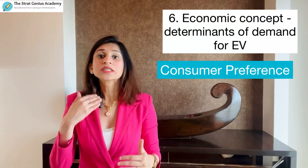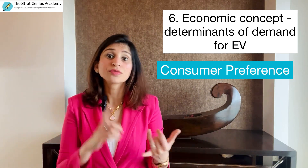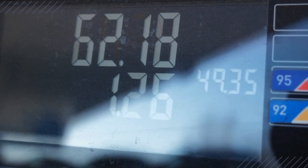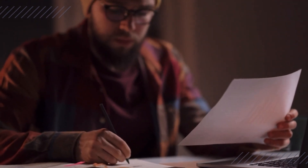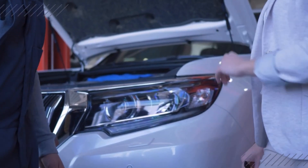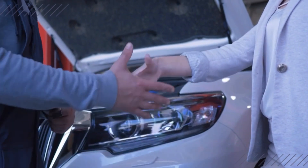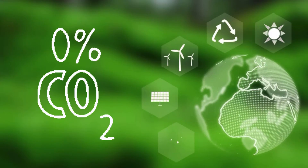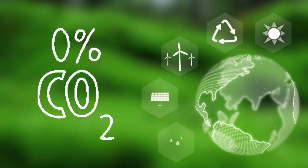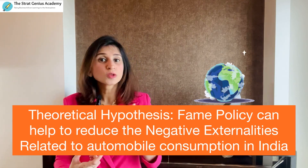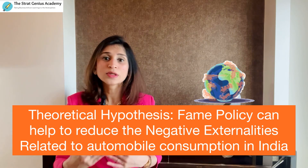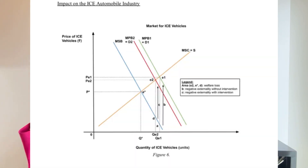The next determinant is consumer preferences and trends — point out factors such as the fear of insufficient charging infrastructure, high fuel prices creating a psychological barrier, and driving range challenges. However, people are still showing enthusiasm about switching to EVs that are completely sustainable with zero emissions. Analyze all your determinants of demand, and then come up with a conclusion based on these theories alone — you can say that the negative externalities can be reduced, drawing and explaining a diagram to illustrate this.